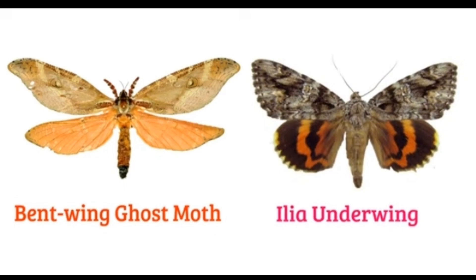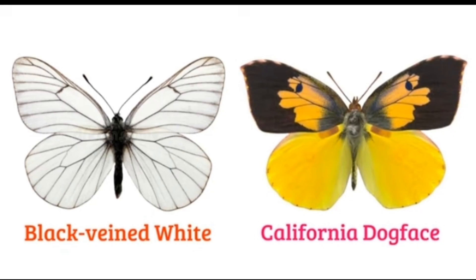Berentwing Ghost Moth, Elia Underwing butterfly. Black-and-White California Dog-Faced butterfly.